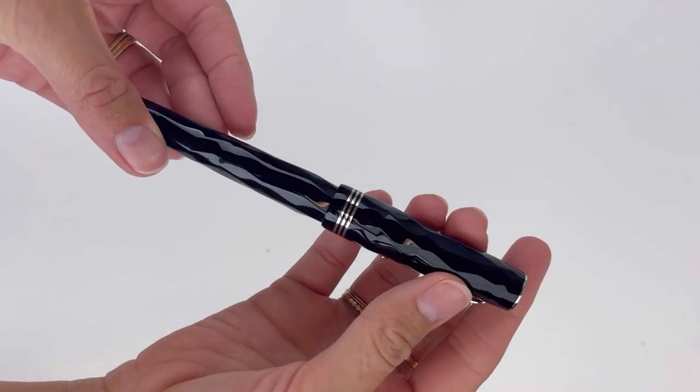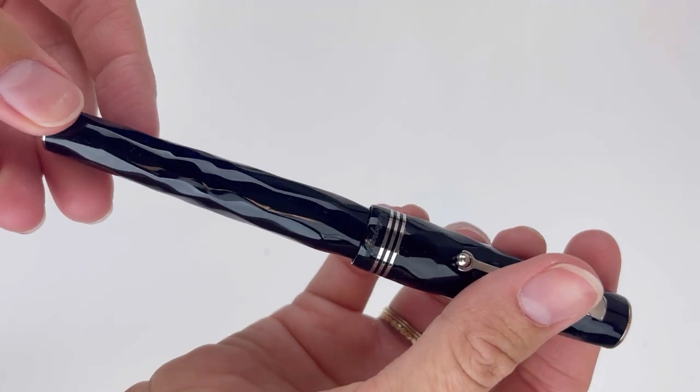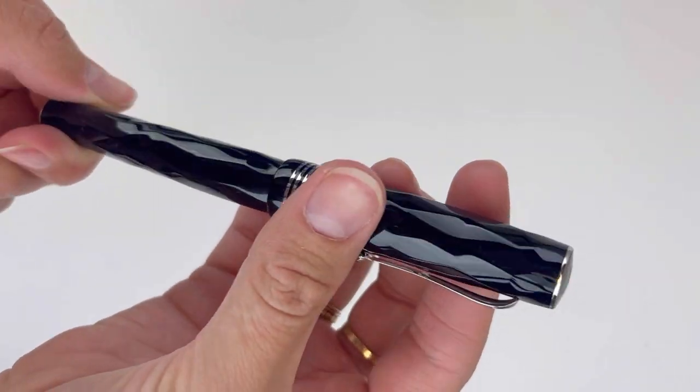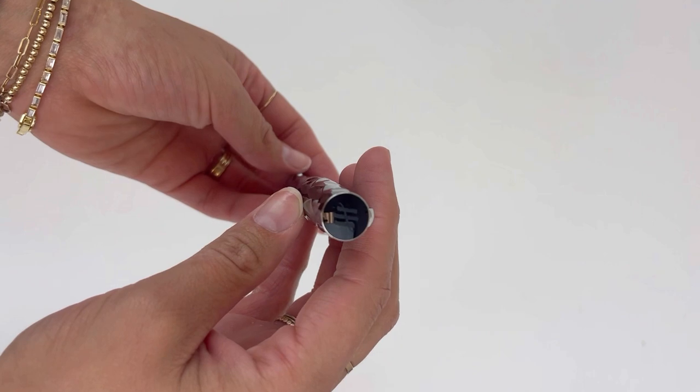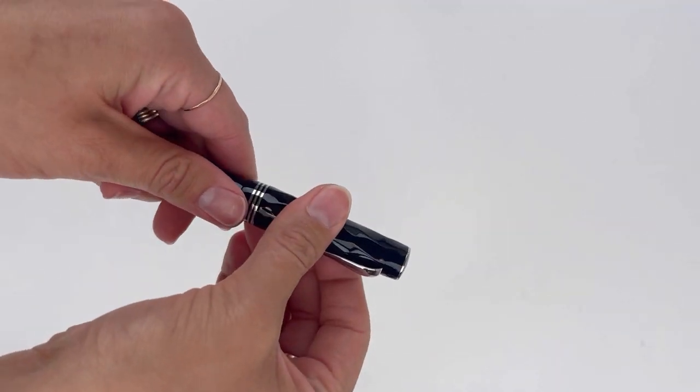Okay, so let's get a look at this carved design and that cap band. You'll also see the classic contour clip with the Rosalino clamp. You've got the Monte Grappa logo on the finial and it's a threaded cap.